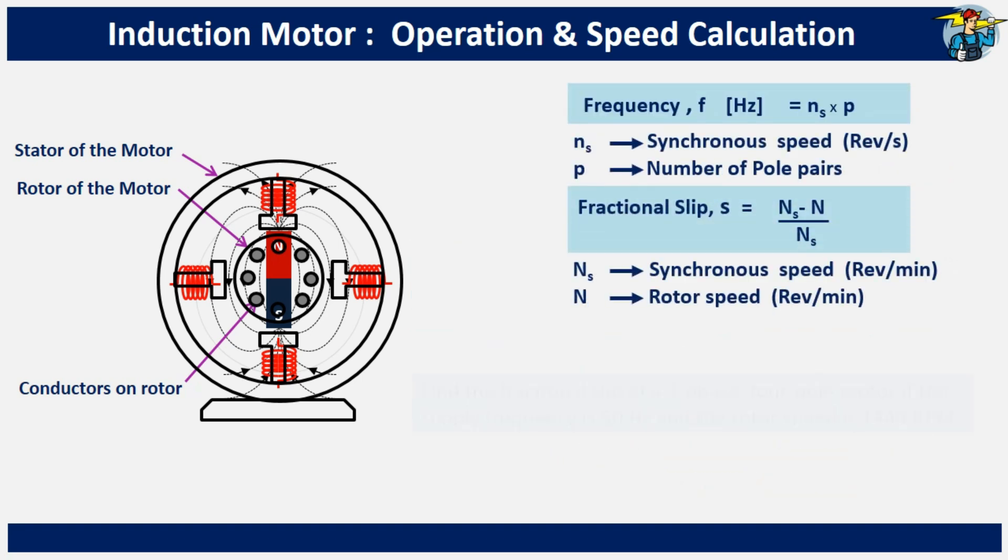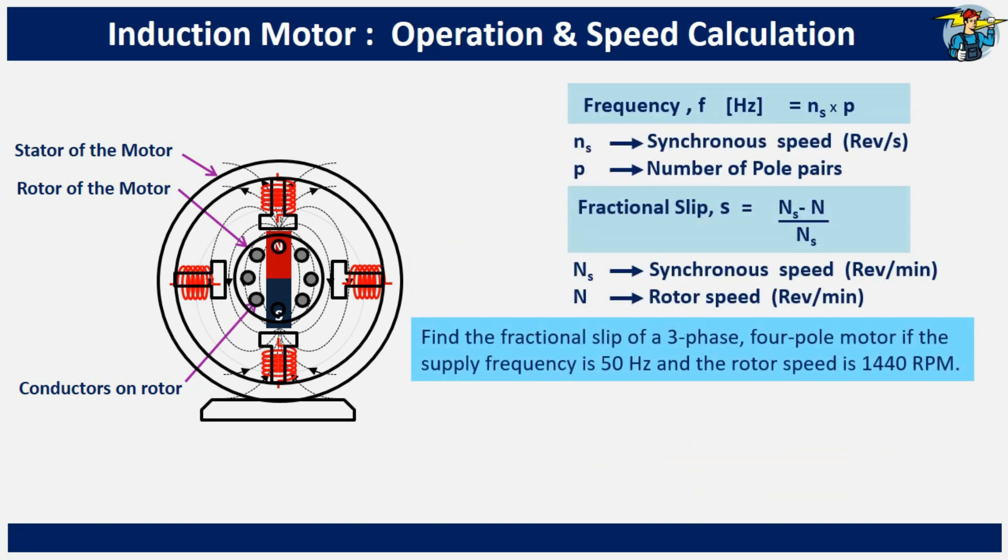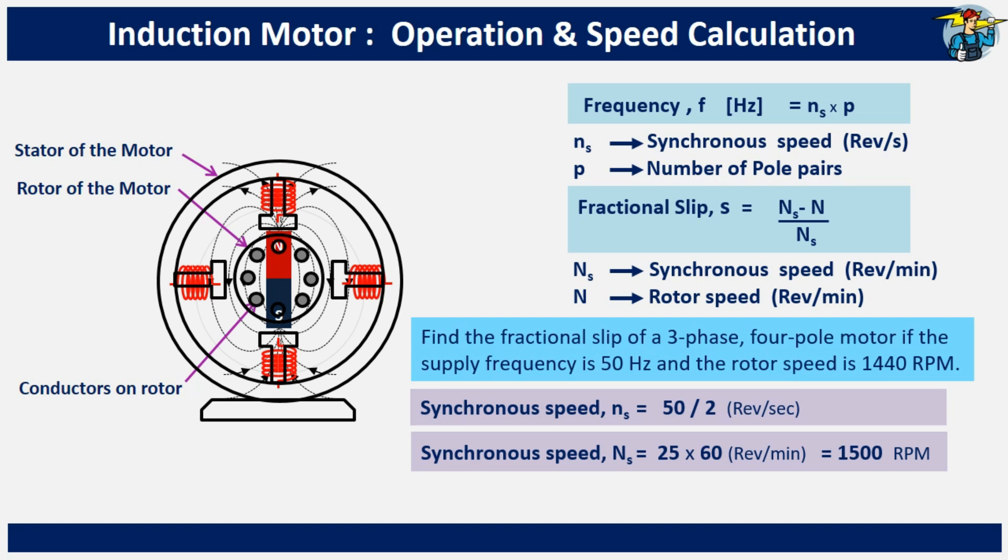Let's solve an example. It says to find the fractional slip of a three-phase, four-pole motor if the supply frequency is 50 hertz and the rotor speed is 1440 RPM. From the first formula, the synchronous speed is 50 divided by 2, and after multiplying by 60, you get 1500 RPM.